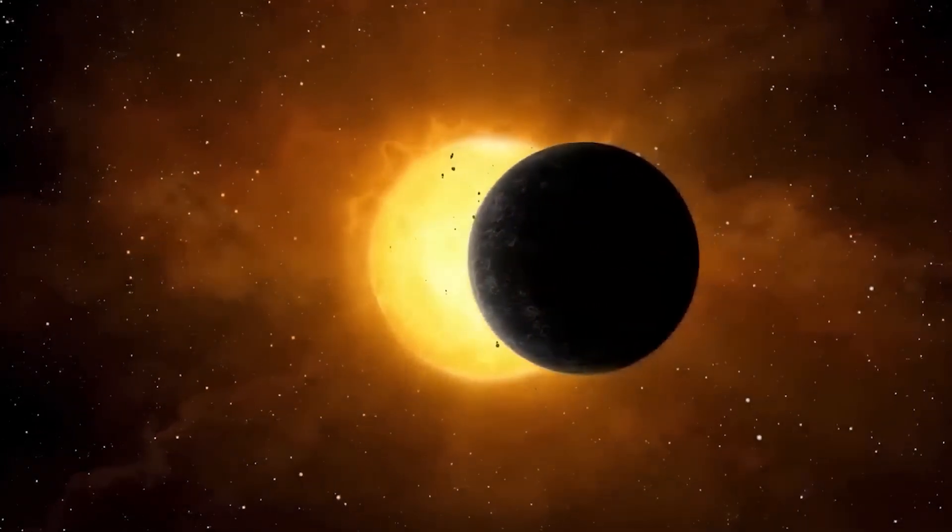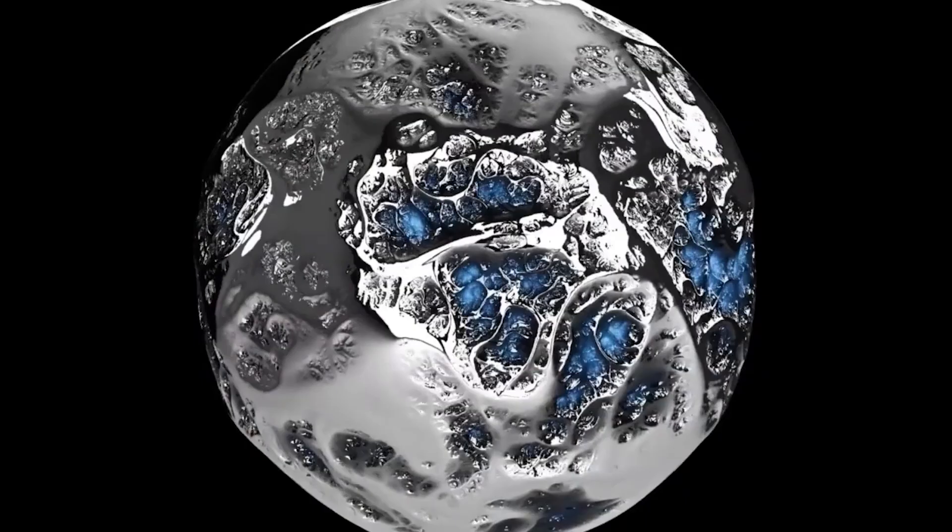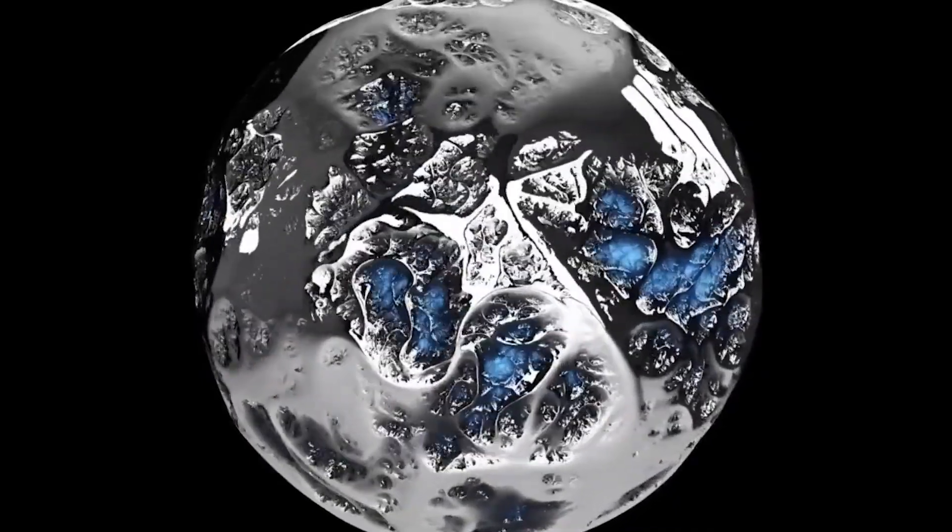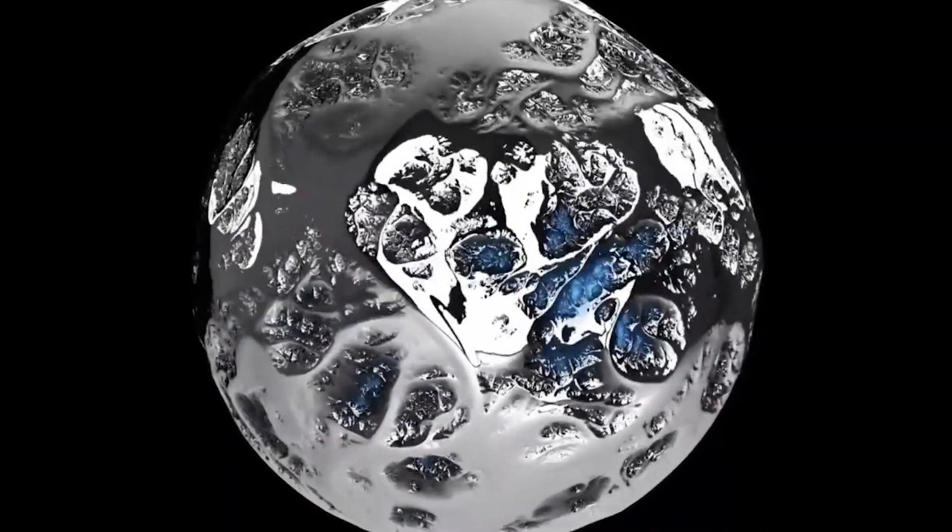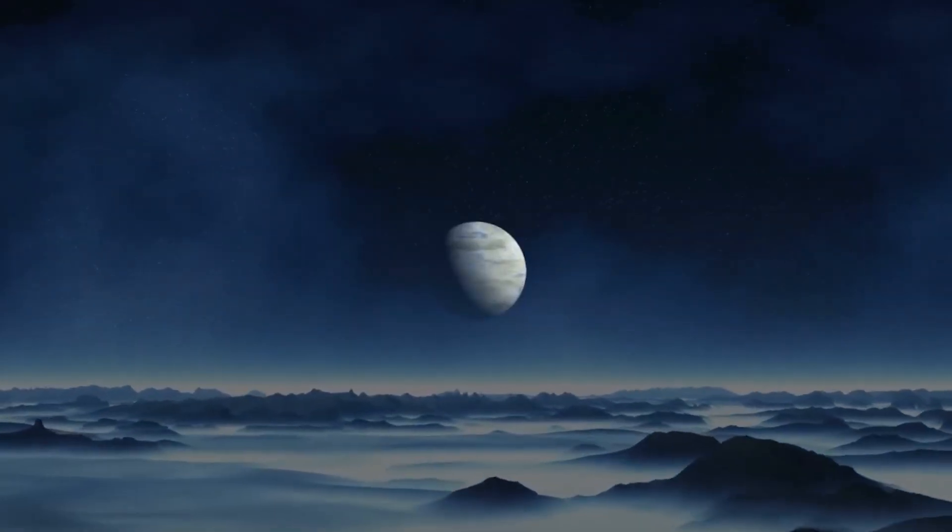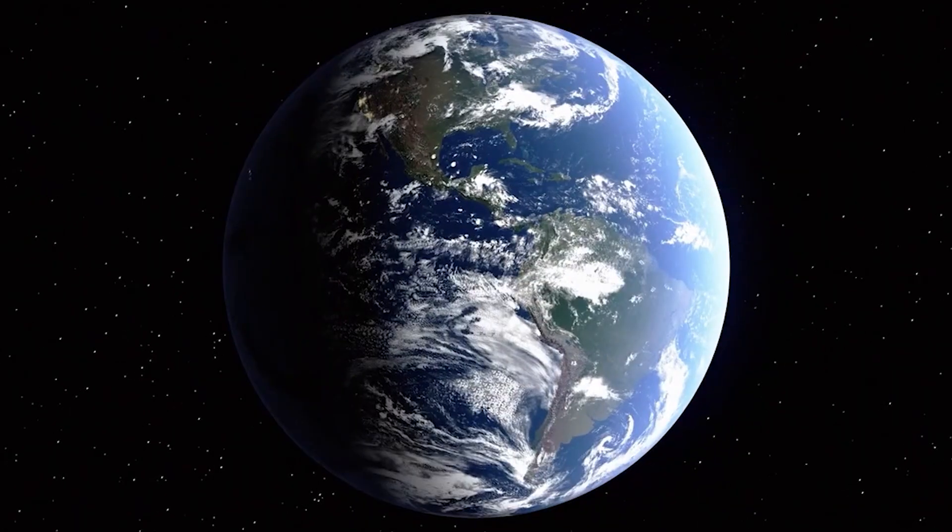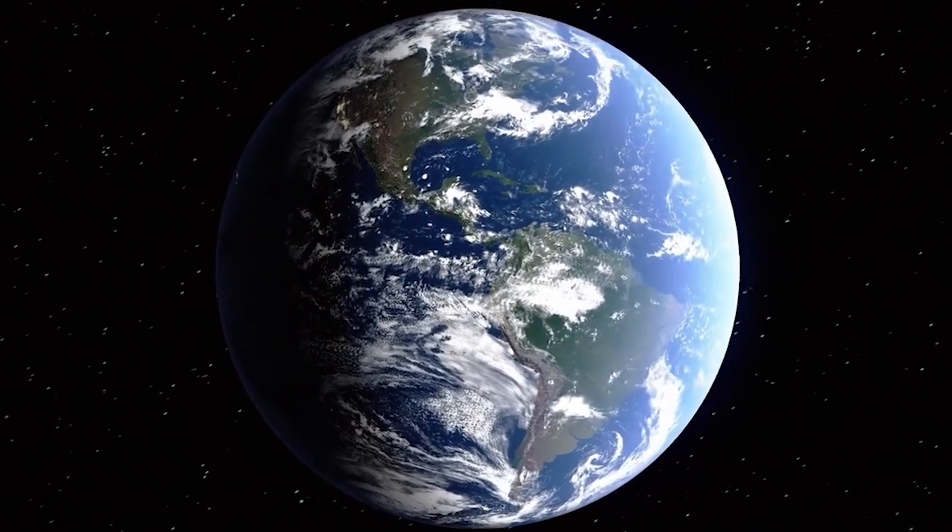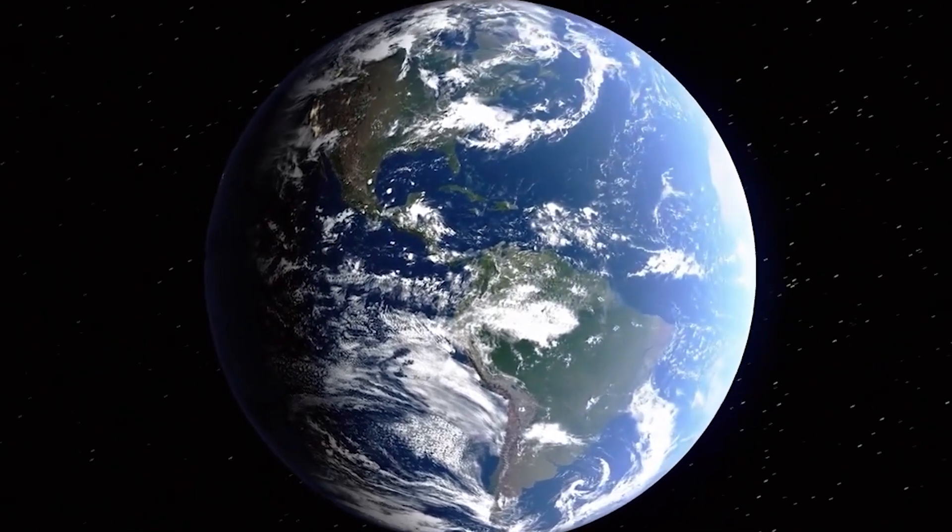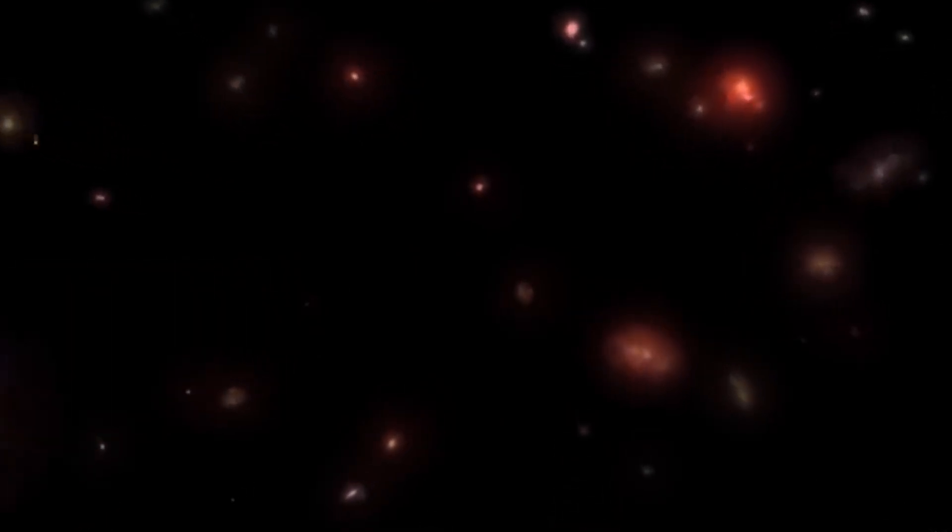Some theorists are now reviving the concept of the cyclic universe, the idea that the Big Bang was not the birth of everything, but merely the latest in a series of expansions and contractions. If the Webb is seeing structures that are too mature to have formed in the time allowed, maybe that's because they're relics from an older cycle of the cosmos, fossilized evidence of a previous universe that left its imprint on ours. But if that's true, then time itself may not be a single arrow pointing from past to future. Instead, it might be a loop or even a fractal, splitting and merging in ways we don't yet understand.